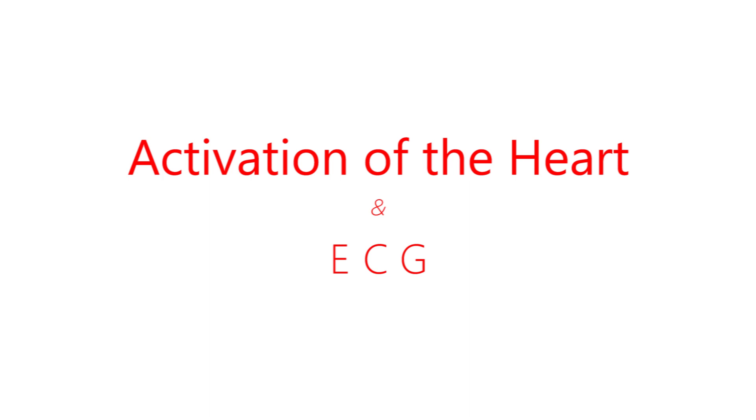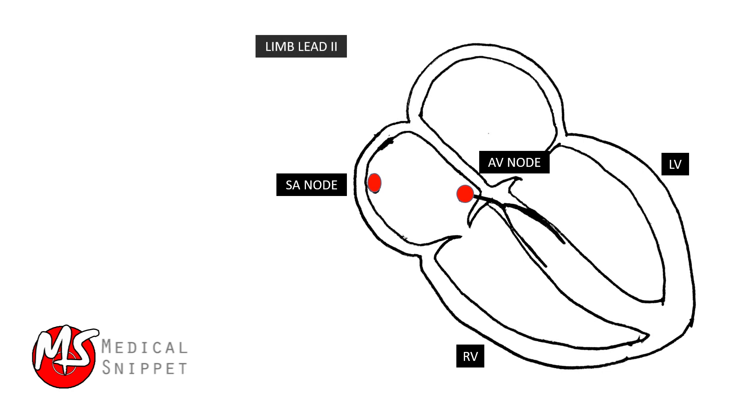Activation of the heart and ECG. In limb lead 2, the vector is directed from the negative electrode on the right arm toward the positive electrode on the left lower limb at an angle of plus 60 degrees.